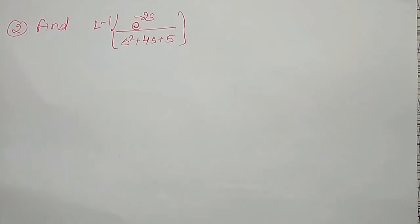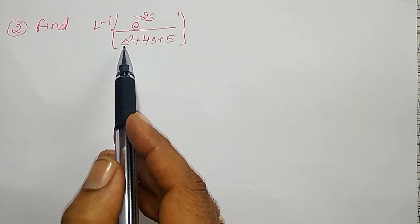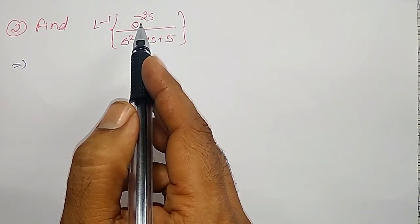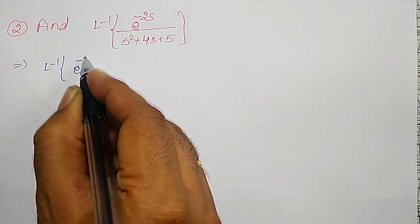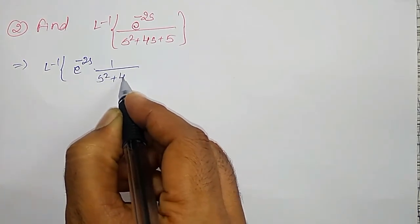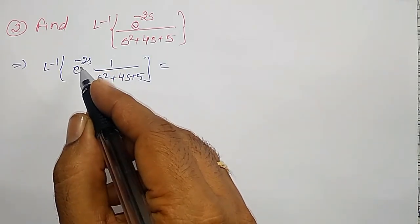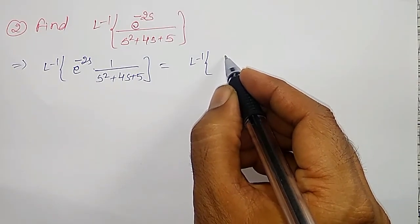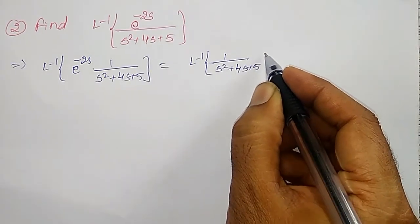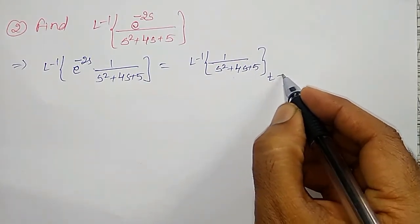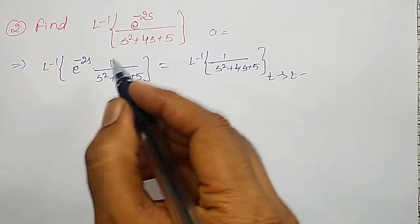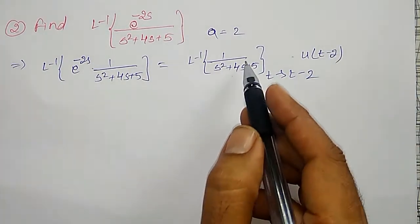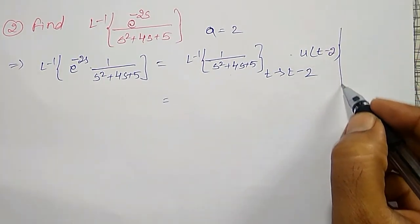Another example: find the inverse Laplace Transform of e to the power minus 2s divided by s squared plus 4s plus 5. Here, two properties you have to use. Since e to the power minus as is multiplied, I write it as: inverse Laplace Transform of e to the power minus 2s into 1 divided by s squared plus 4s plus 5. Due to this e to the power minus as, I write: inverse Laplace Transform of F of s, where F of s is 1 divided by s squared plus 4s plus 5. In this, t is replaced by t minus a. Comparing, a is equal to 2. So t minus 2, and extra multiply u(t minus 2).